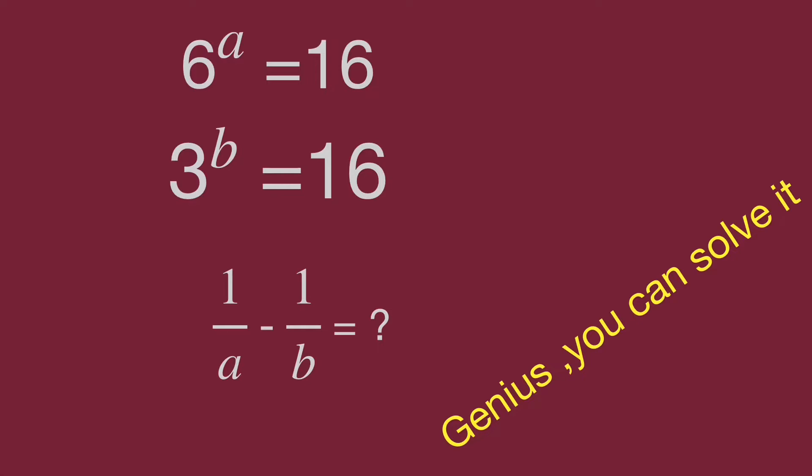We have 6 power of a equal to 16, 3 power of b equal to 16. Then to find the value for 1 over a minus 1 over b. Can you find it?